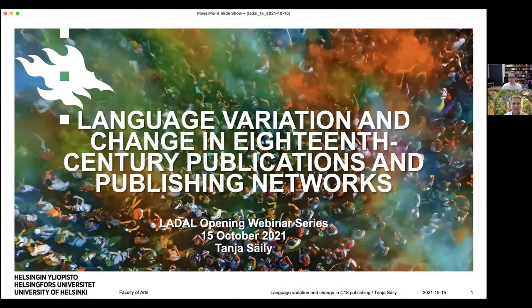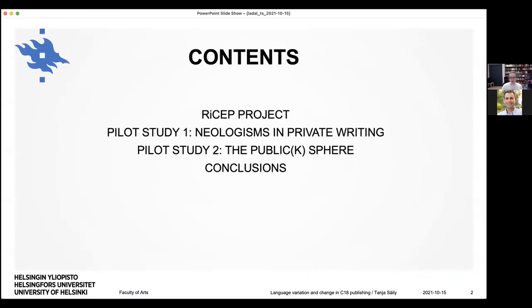So here are my slides. Can you see them? Yes, we can. Thanks. Perfect. So indeed, my topic is language variation and change in 18th century publications and publishing networks. So here are the contents of the talk. I'll first introduce the premises of our RICEP project where we study these issues. Then I'll talk about two pilot studies. If I have time, I probably will. So the first one is about neologisms in private writing. So this is something we did in a previous project that we are now hoping to apply the same pipeline in a way to this public writing. And then the second pilot study is about the public sphere. So studying actually the word public in these publications, which should tell us something interesting about developments in the public sphere. And at the end, I'll just go through some conclusions and what we are going to do next in the project.